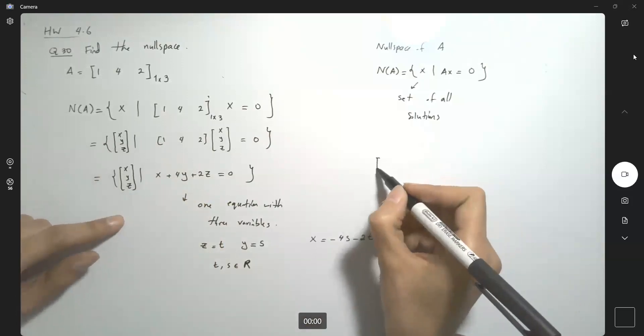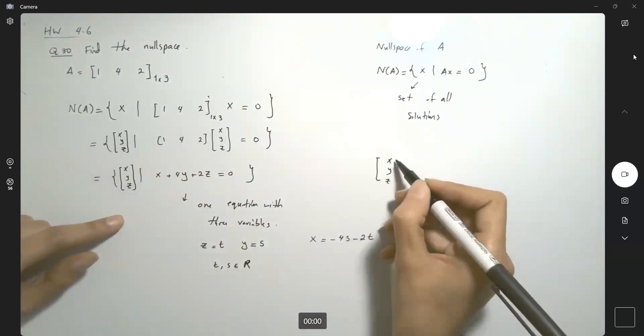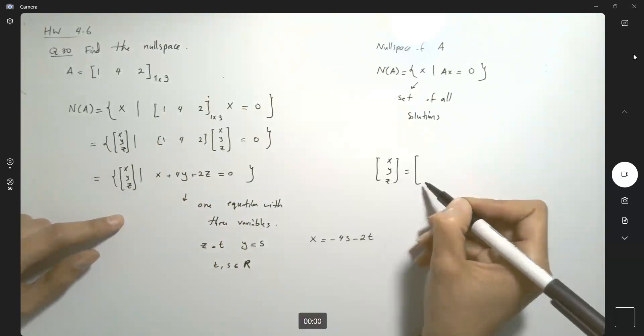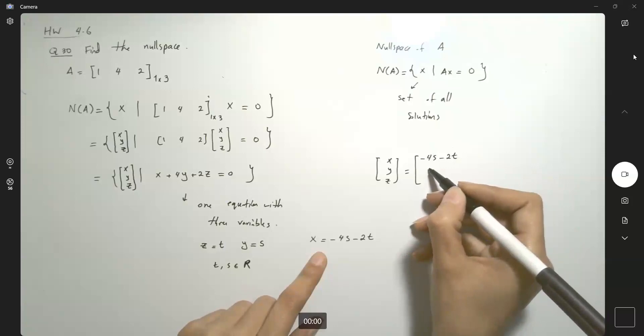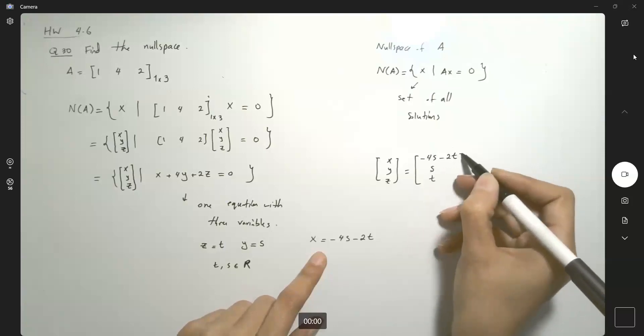Very good. So this x, y, and z can be represented as negative 4s minus 2t, then s, and then t.